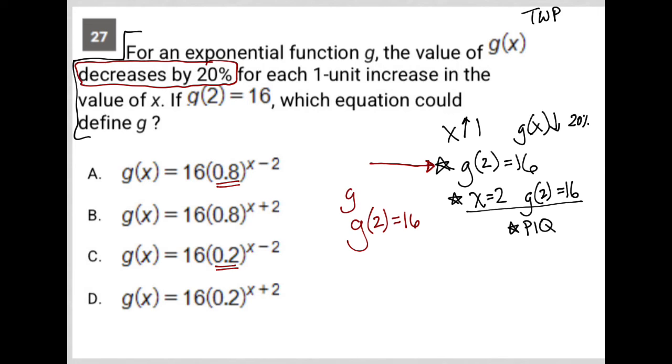that means that g(1) had to have been a number that when reduced or decreased by 20%, equals 16. Now that value would be 20, okay? Because I know that 20% of 20 is 4.